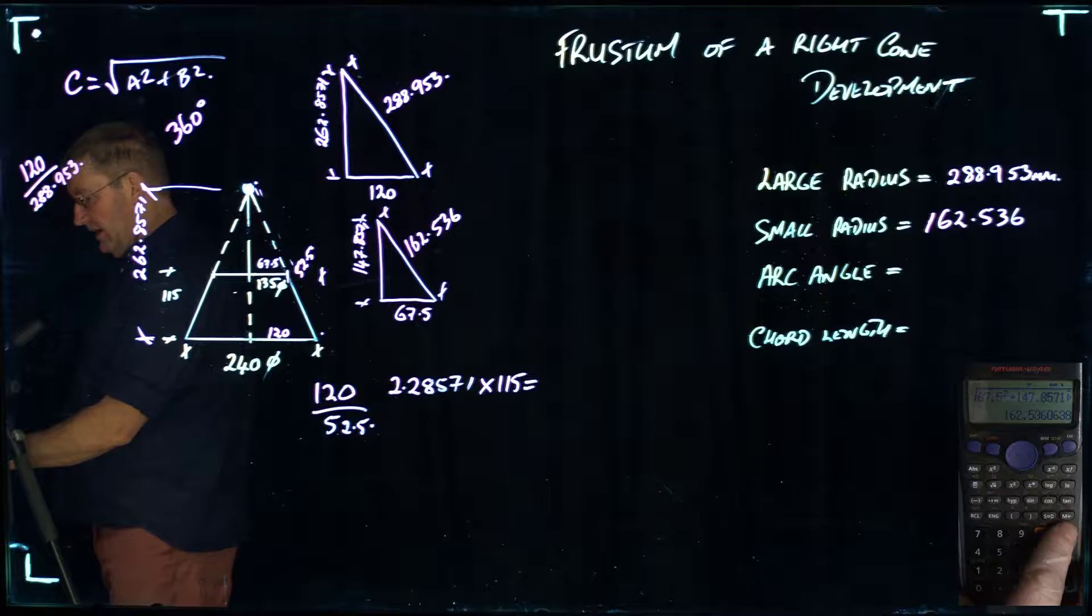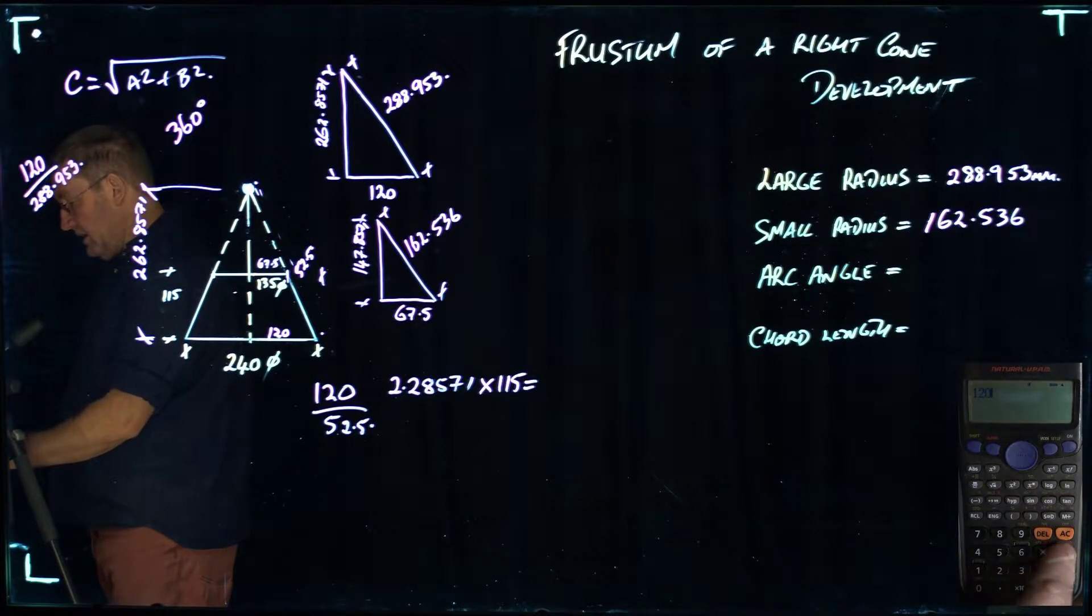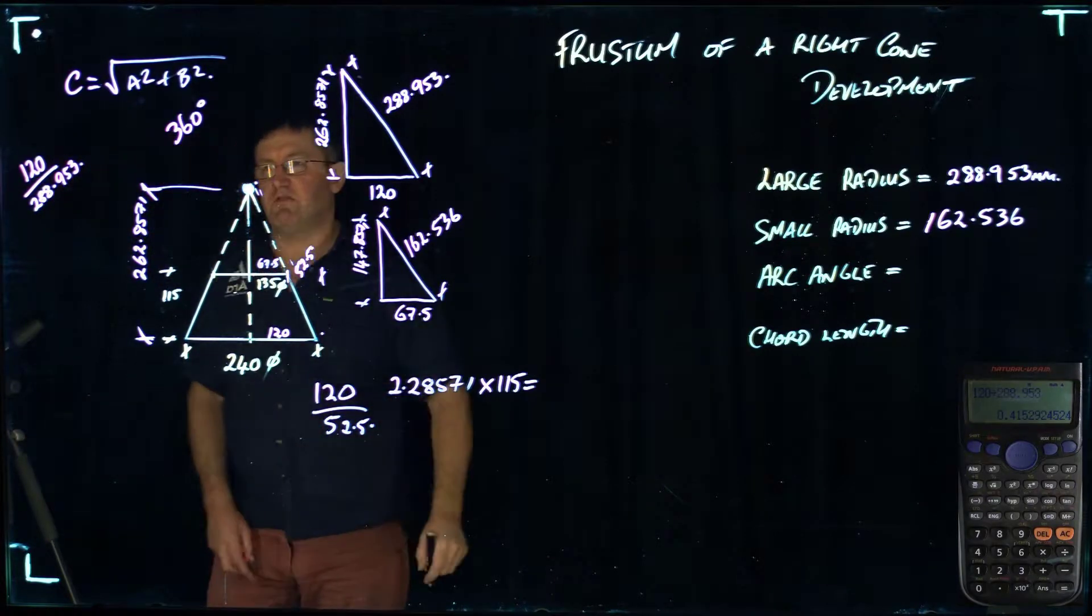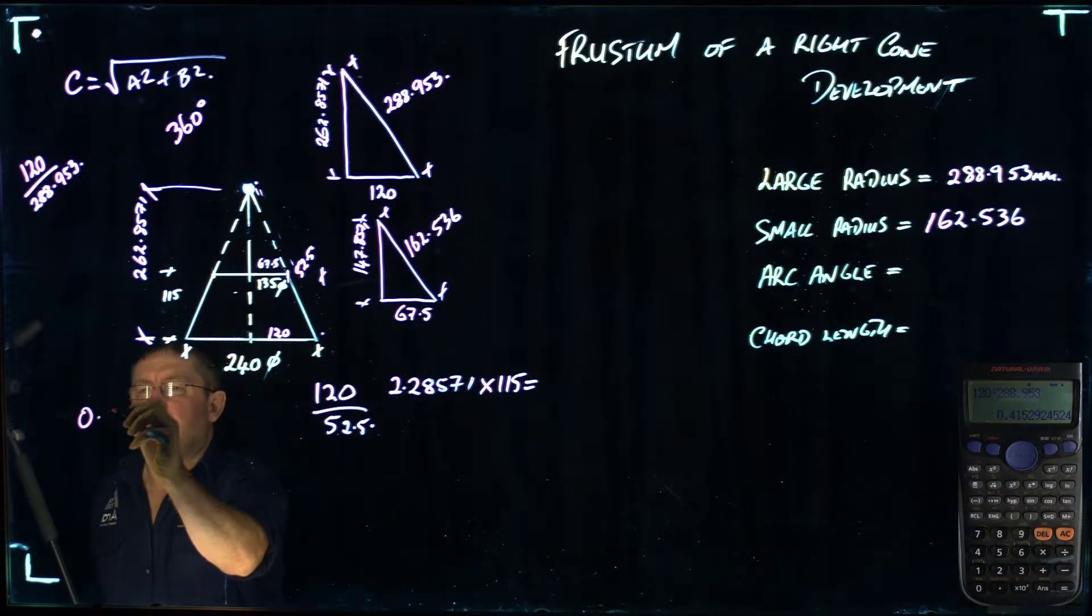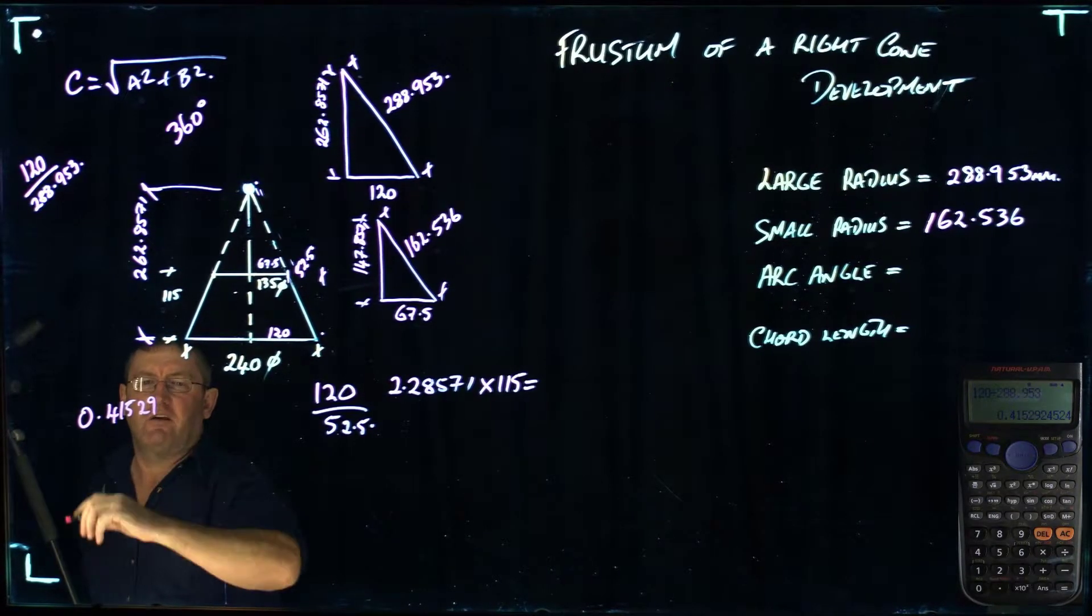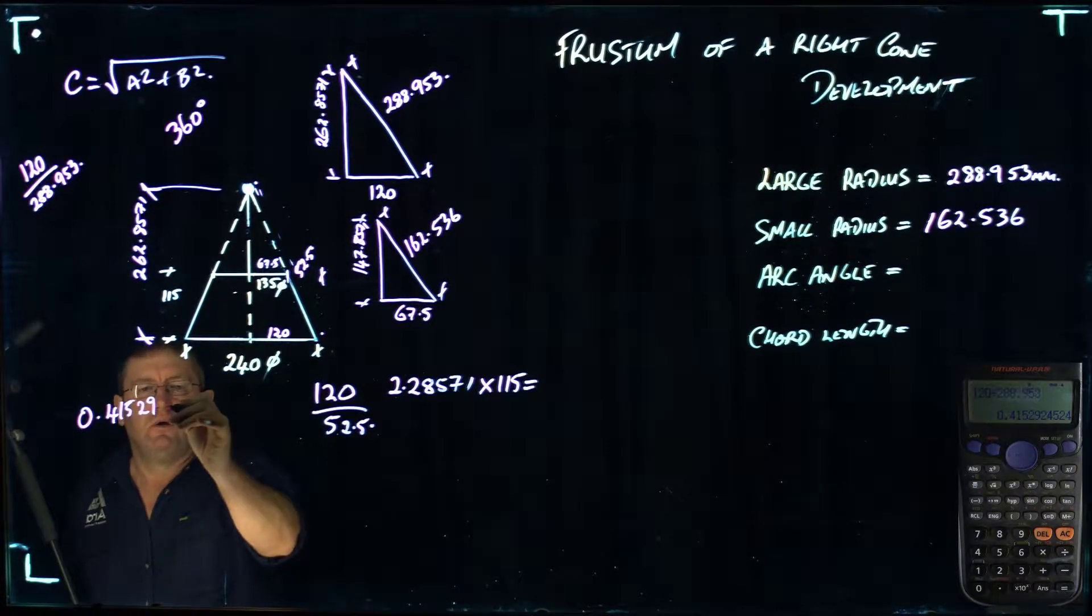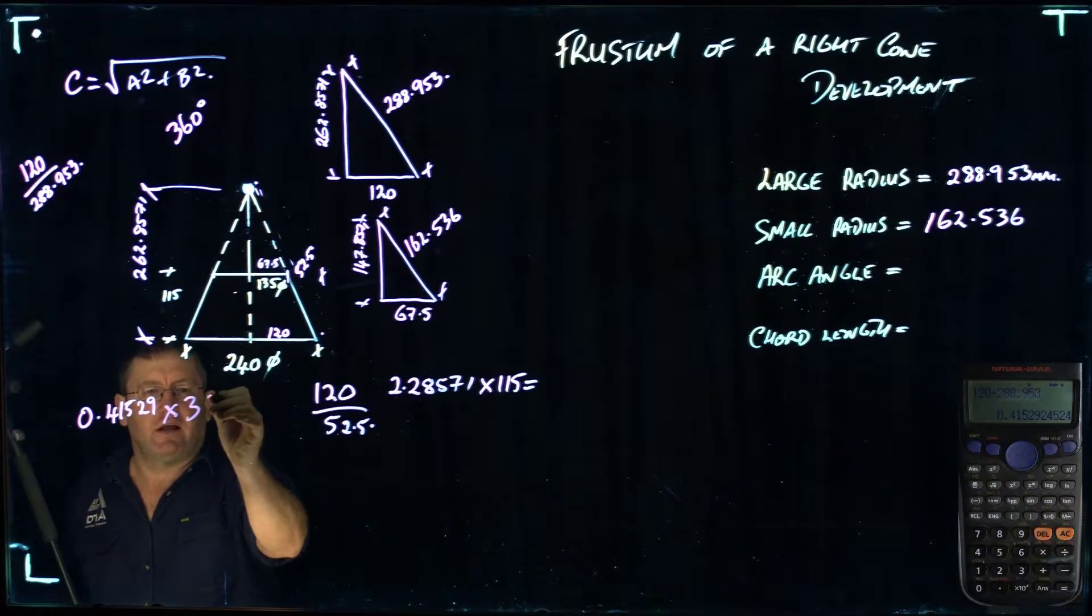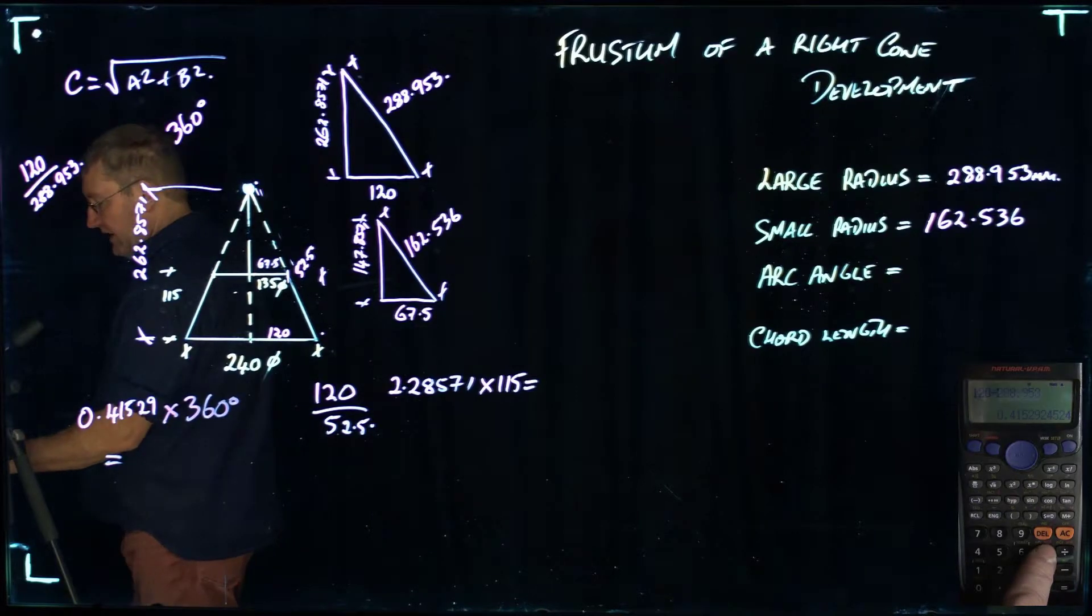On the calculator, I've got 120 divided by 288.953 equals. Now it's giving me a number there. It is 0.41529. I'm going to go to five decimal places. Now that is a portion or a fraction of the 360 degree circle. So I'm going to times that figure by 360.